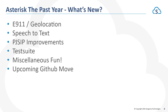So what's new over the past year? I'm going to talk about E911 and geolocation, speech-to-text, some PJSIP improvements, some test suite updates, miscellaneous new features, and also an upcoming move of where we do things as a project.